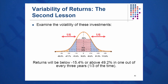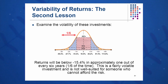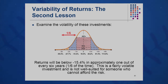Returns will be below minus 15.4% or above 49.2% one out of every three years — one-third of the time. One-sixth of the time, returns will be below minus 15.4%. Is this appropriate for widows and orphans? The answer is no. That's a pretty volatile investment — a big negative return is not appropriate for anyone who can't afford that risk. Here we use statistics to make sure we're making good investments.